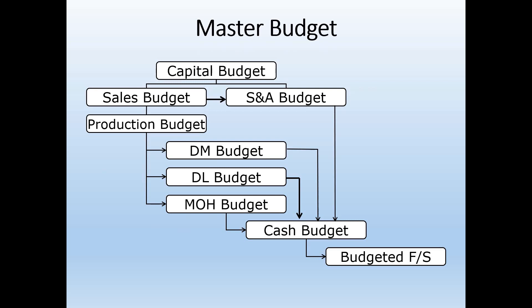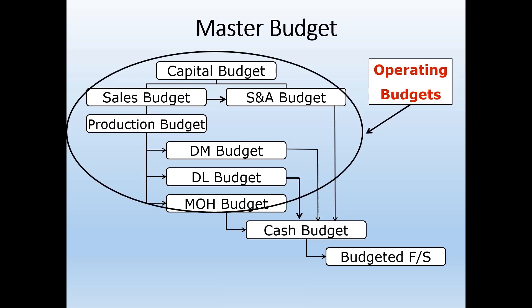This is a diagram of a firm's master budget. It looks complicated because it's composed of a number of smaller budgets. These are the operating budgets — all of the inputs that the firm needs. The start of the budgeting process is always the sales budget, because that determines everything the firm does during the period. Based on the sales budget, the firm determines its production budget — how many units it needs to produce so that it will have enough units to sell, plus any extra units it wants in case sales are different than predicted.